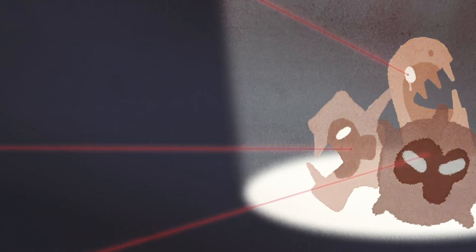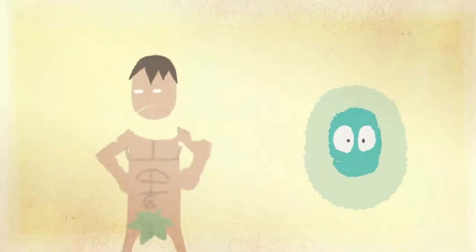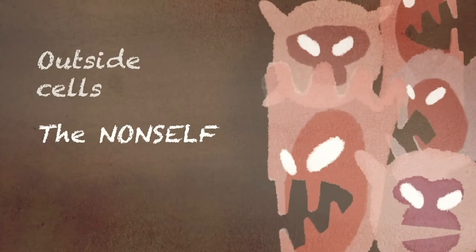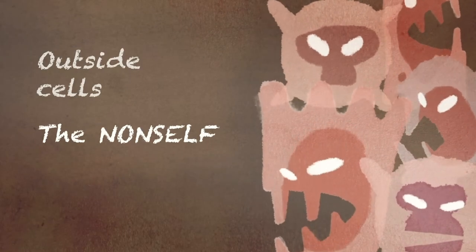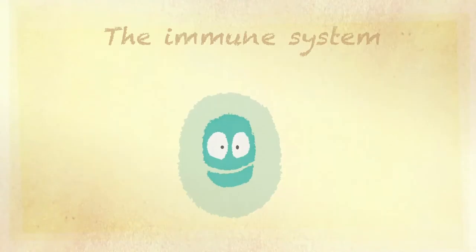It just so happens that our body has its own natural defense system which knows how to make the difference between our healthy cells, the self, and outside cells, dangerous intruders, the non-self. This natural system is our immune system.